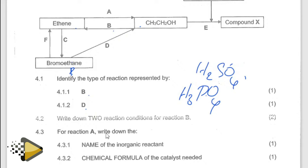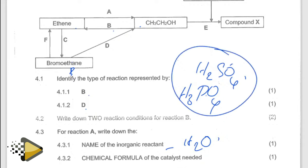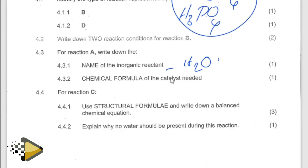Write down two conditions for reaction A. Write down the name of the inorganic reactant. The moment you are forming an alcohol, you have to use H₂O — water must be present. Then they are saying the catalyst: the chemical formula of the catalyst. It is still the same acid, because sometimes you call it acidified water — you acidify the water. Then they are saying write down the balanced chemical equation for reaction C.